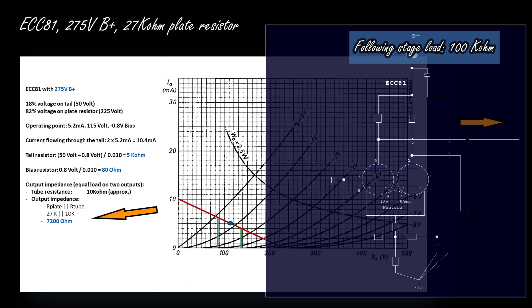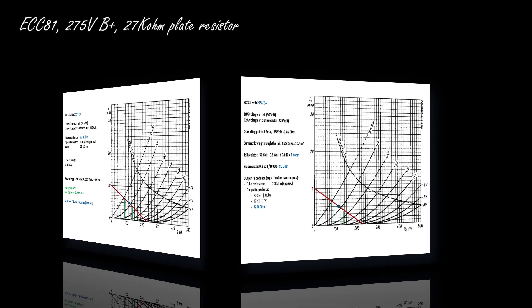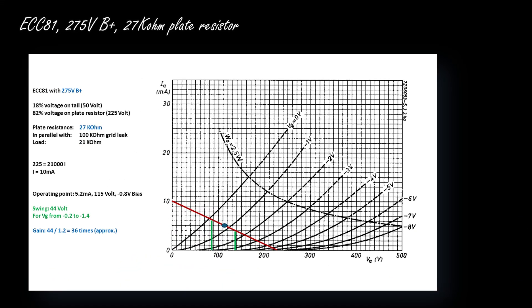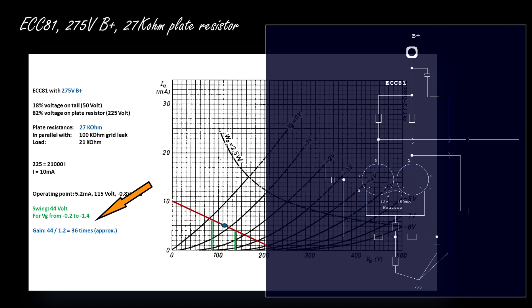Other tubes like the ECC83 have a much higher inherent resistance — about 100 kilohms — so in my opinion they are not well-suited to act as a phase splitter or to properly drive the output stage of a power amplifier. One of the last parameters to calculate is the gain. We need 1.2 volts peak-to-peak input to achieve the full swing of 44 volts peak-to-peak, which is required to drive the output tubes at full power. This gives a gain of 36 times.